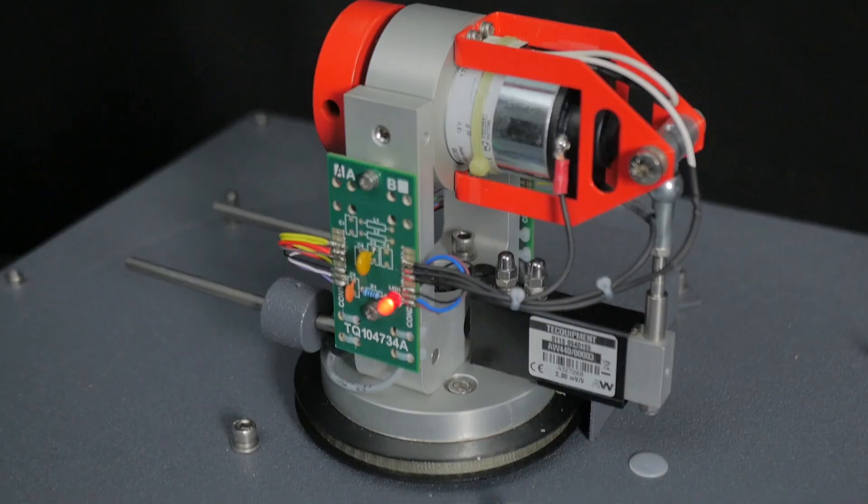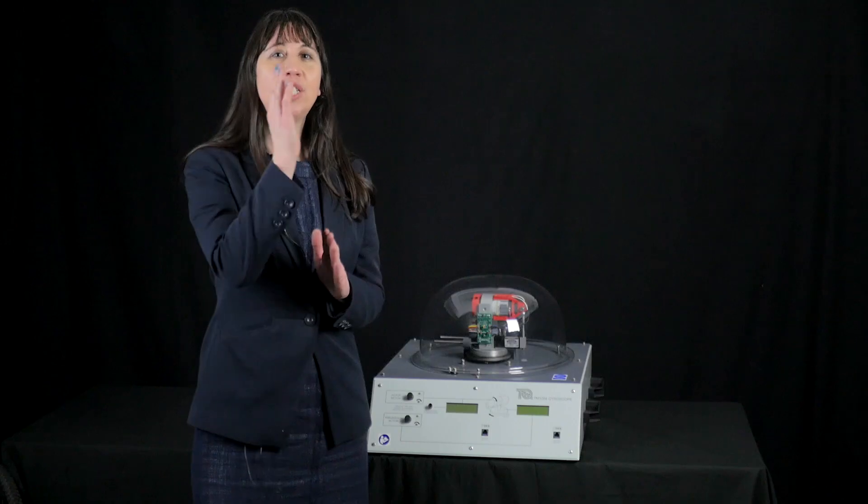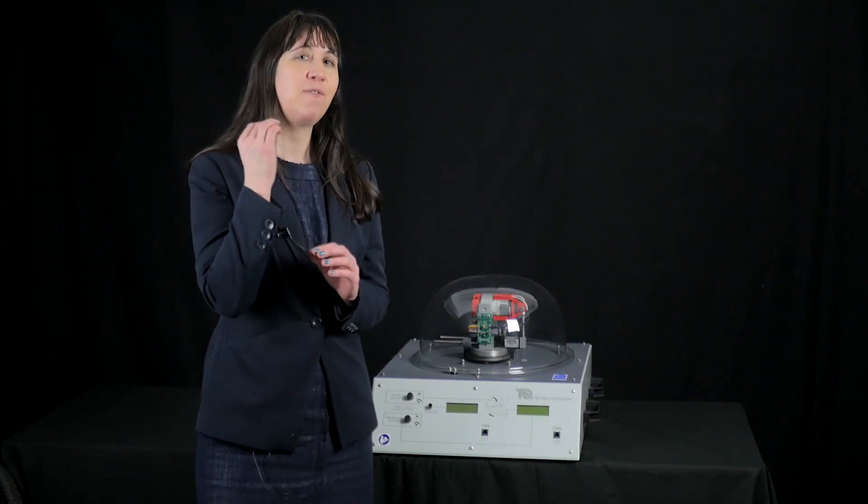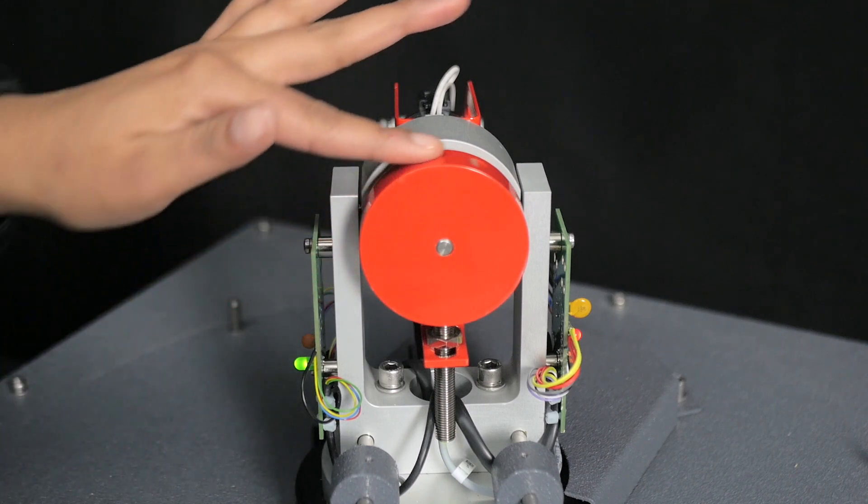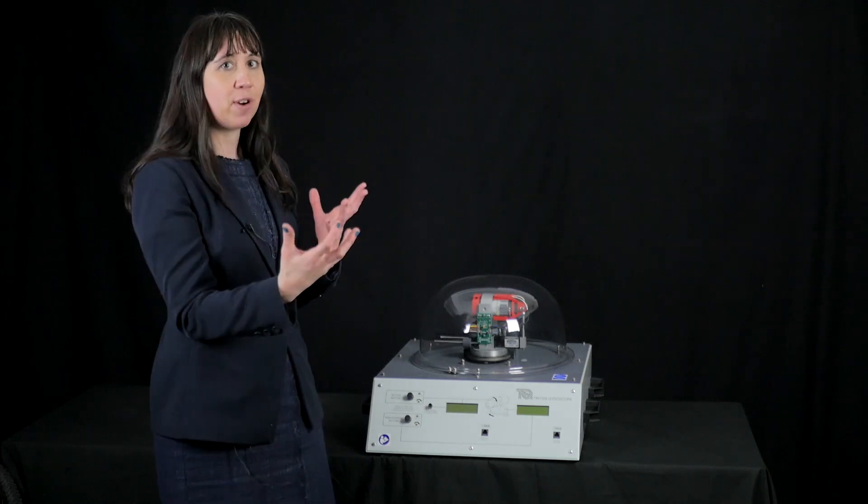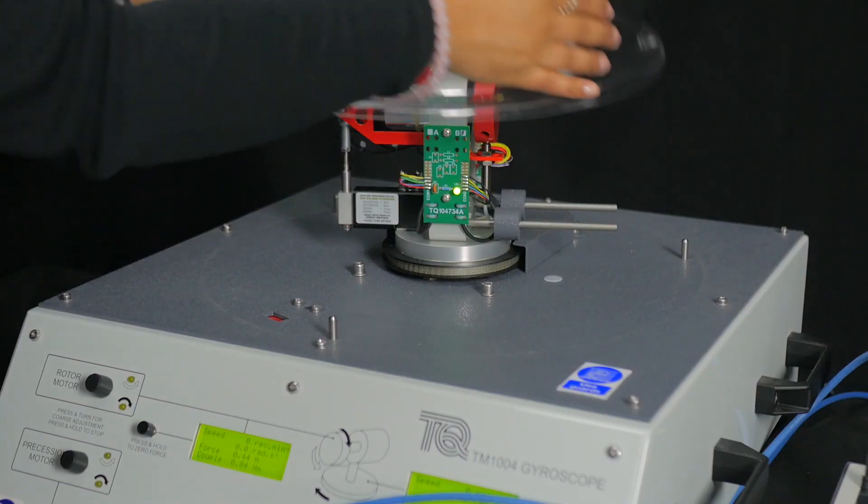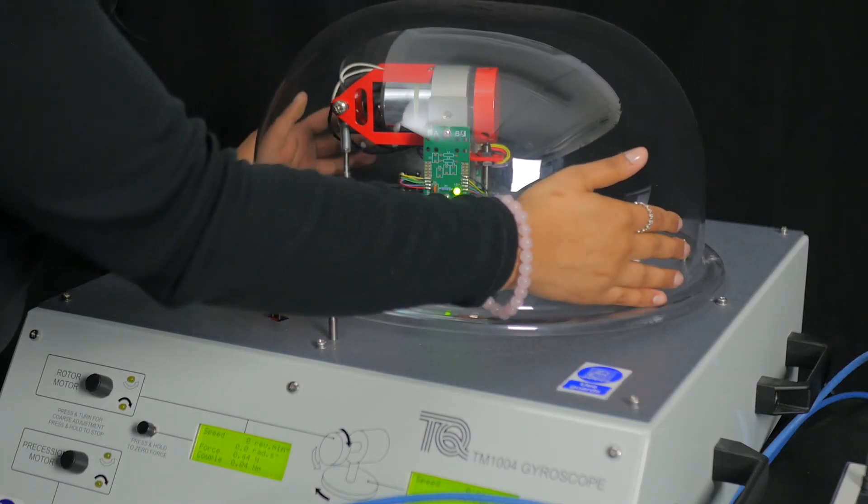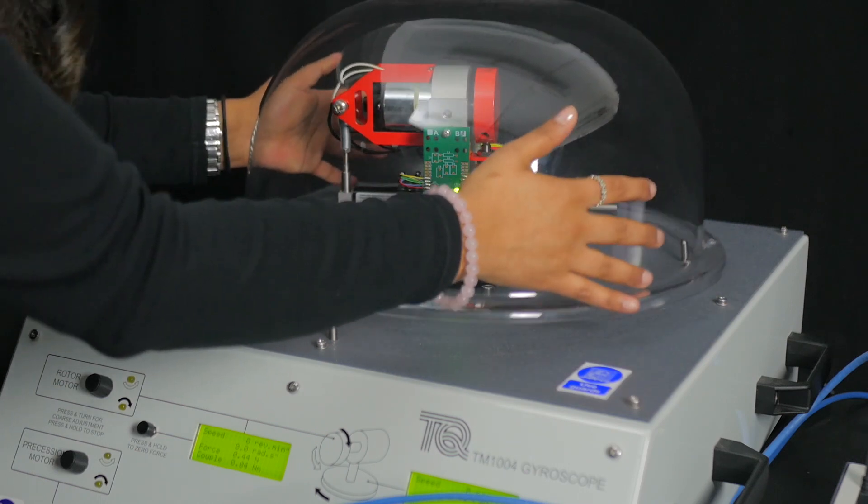Here is a precession motor mounted vertically to turn the belt and pulley system to the flywheel to rotate the gyroscope assembly around the vertical axis. This is supported by a gimbal frame, holding the gyroscope in place as it spins and rotates under this clear protective dome.